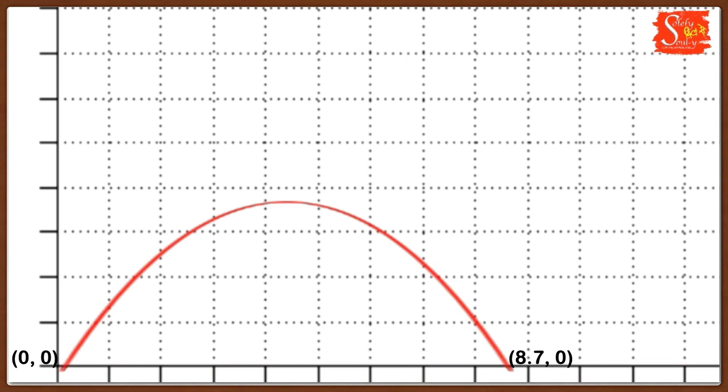Now when you use the intercept form of a quadratic curve, it looks like y = a(x - 0)(x - 8.7). To find the value of a, we can take one point on the curve, which is an obvious point (8, 1).